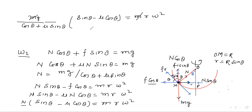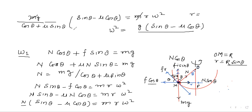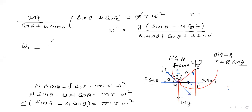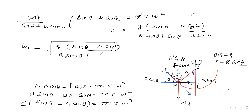The mass m cancels, and r = R sin θ, so ω² = g(sin θ − μ cos θ) / (R sin θ (cos θ + μ sin θ)). Therefore, ω₁ = √[g(sin θ − μ cos θ) / (R sin θ (cos θ + μ sin θ))]. This is the lower limit when the block has a tendency to move downward.